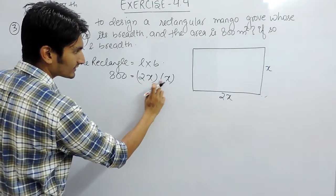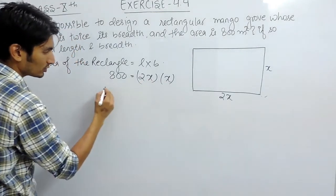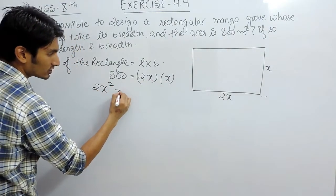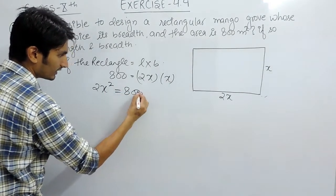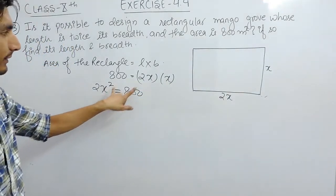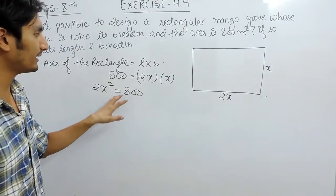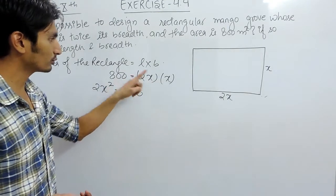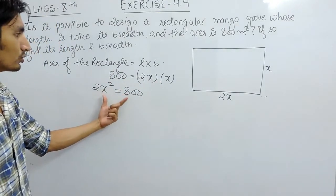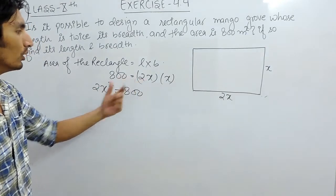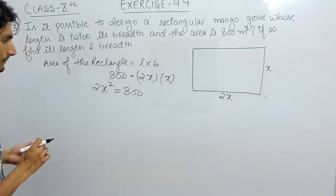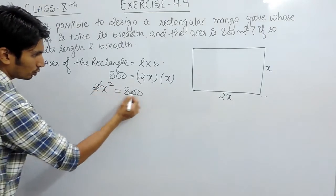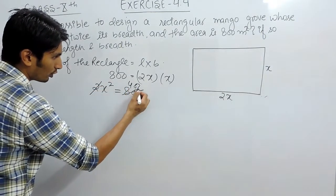So this will be 2 into x into x, which gives 2x² equals 800. I have shifted terms to get 2x² = 800, and cancelling 2 with 800 gives 400.